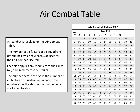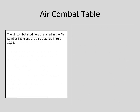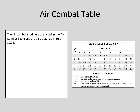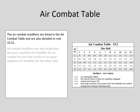The number before the slash is the number of air factors or squadrons eliminated. The number after the slash is the number which are forced to abort. The air combat modifiers are listed in the air combat table and are also detailed in Rule 19.31. Air combat modifiers are very important because a positive net modifier for one side results in an equal negative net modifier for the other side.